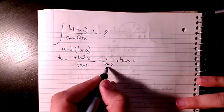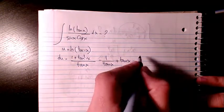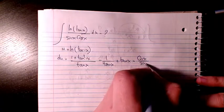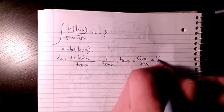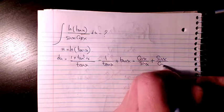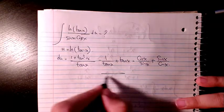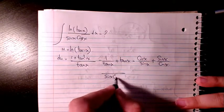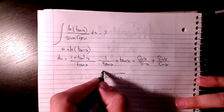Tan is sine over cosine, so 1 over tan is going to be cosine over sine plus tan is sine x over cosine x. If we do the common denominator...